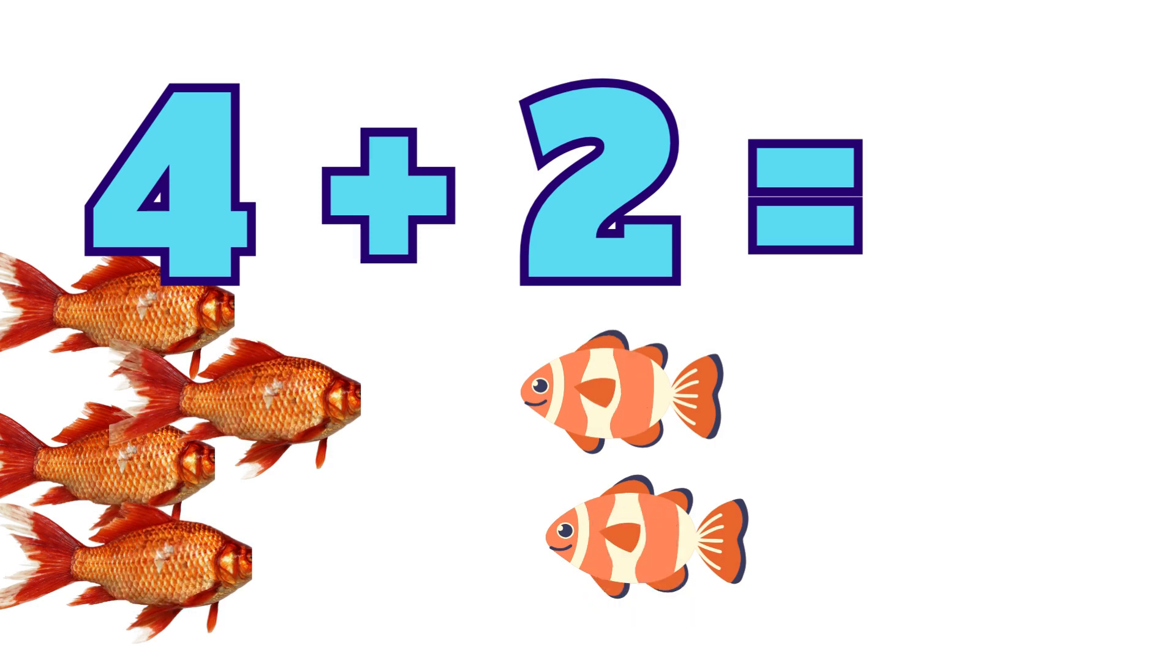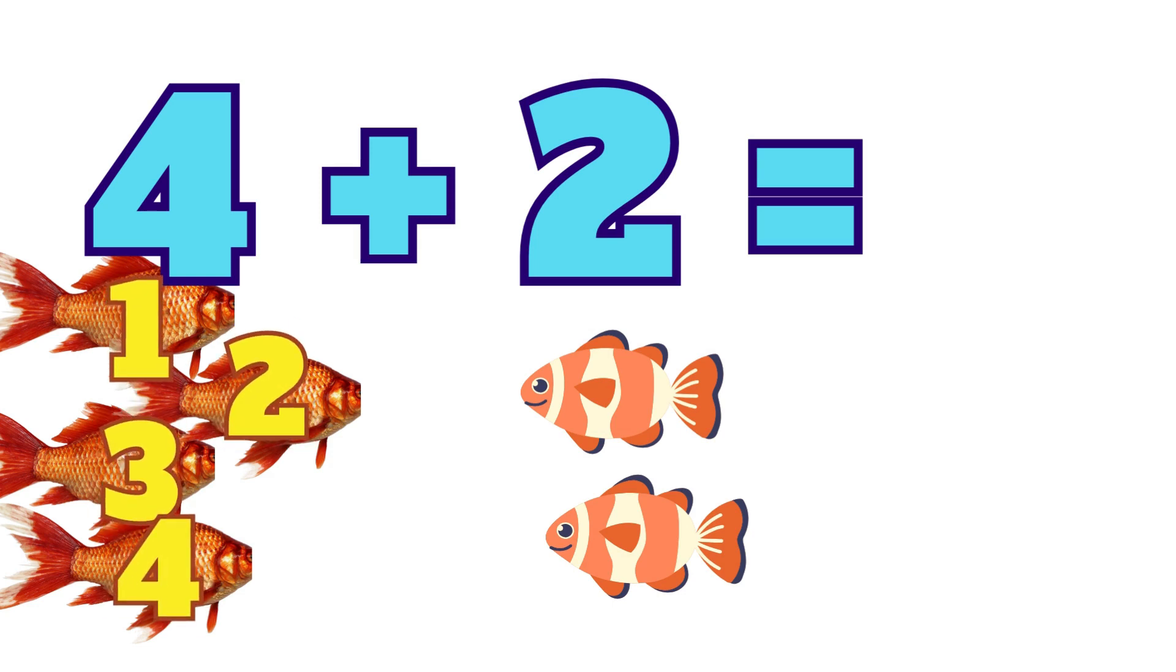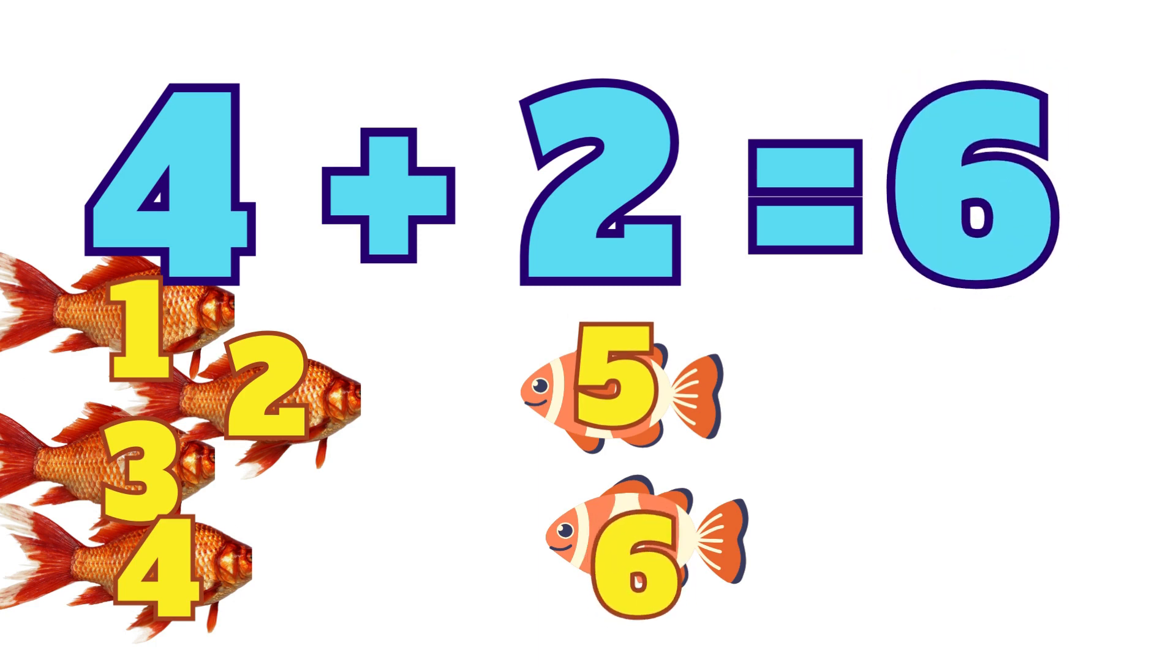Now, if we add and combine all the fish, the sum becomes one, two, three, four, five, six. Six is the sum.